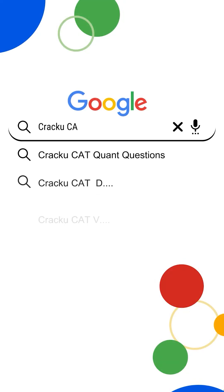If you want a structured daily practice plan just go to Google and search Cracku CAT daily targets.